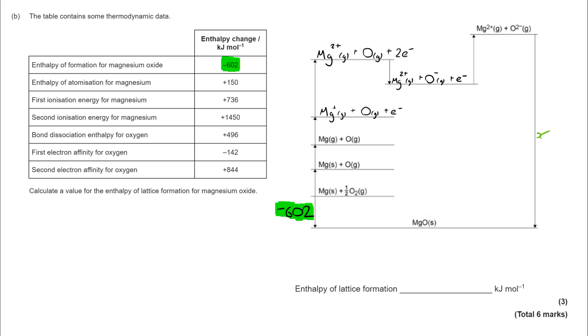So my enthalpy of formation is negative 602. I put that one in. My enthalpy of atomization for magnesium plus 150.